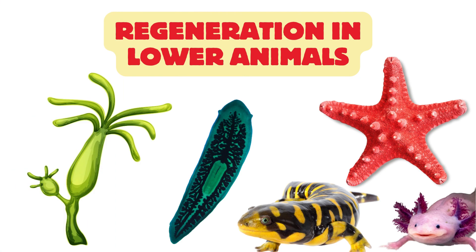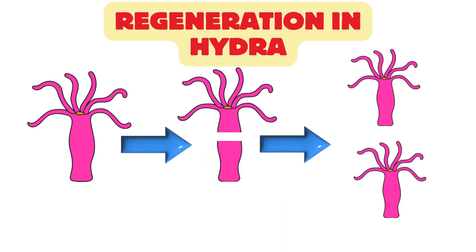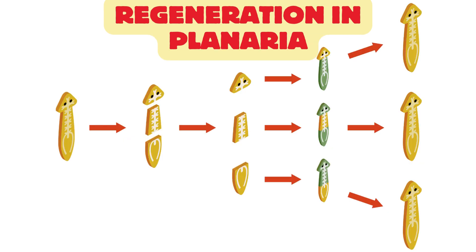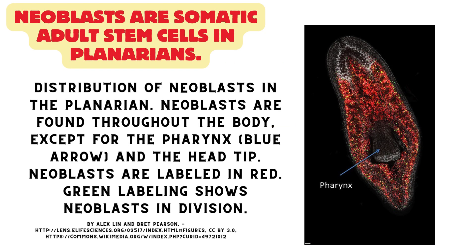Lower animals such as flatworms and salamanders show remarkable abilities to regenerate lost or damaged body parts. In particular, species like planarians exhibit extraordinary regenerative capabilities, being able to regenerate complete organisms from tiny body fragments. Their remarkable regenerative capacity is attributed to the presence of pluripotent stem cells called neoblasts, which proliferate and differentiate to replace lost tissues.